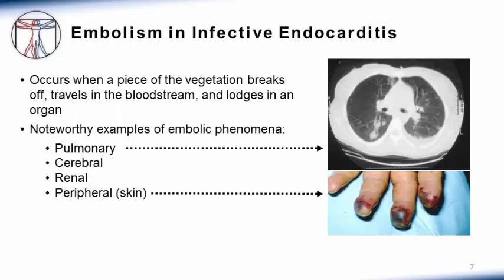Embolic phenomena occur when a piece of the vegetation breaks off, travels in the bloodstream, and lodges in an organ. This can occur in any organ. The most noteworthy are pulmonary emboli, which occur in the lungs, pictured here. Cerebral emboli, which cause embolic strokes and hemorrhages. Renal emboli, which can cause kidney dysfunction. And peripheral emboli, which can manifest on fingers and toes, also pictured here.